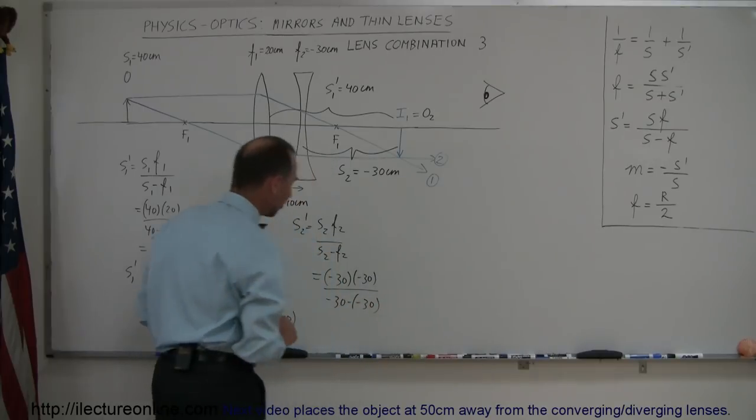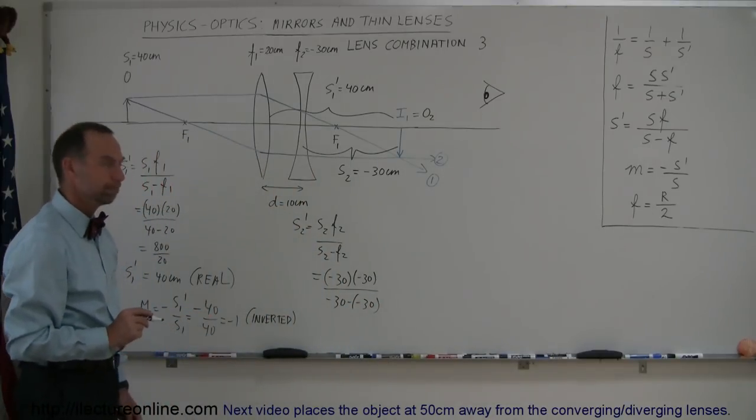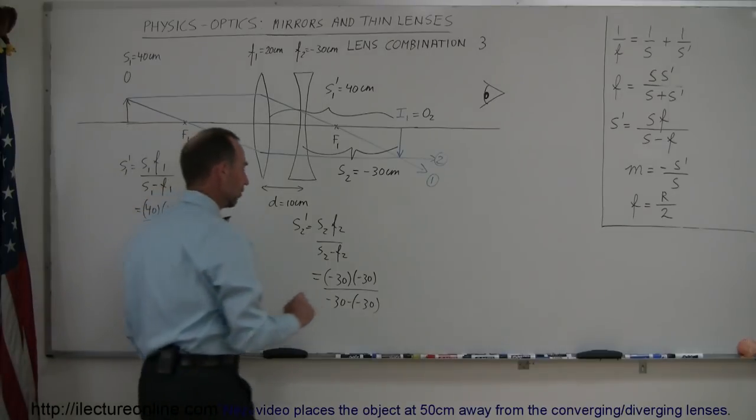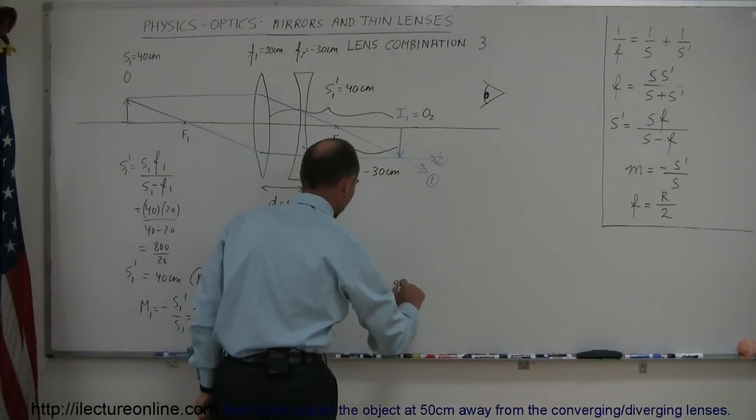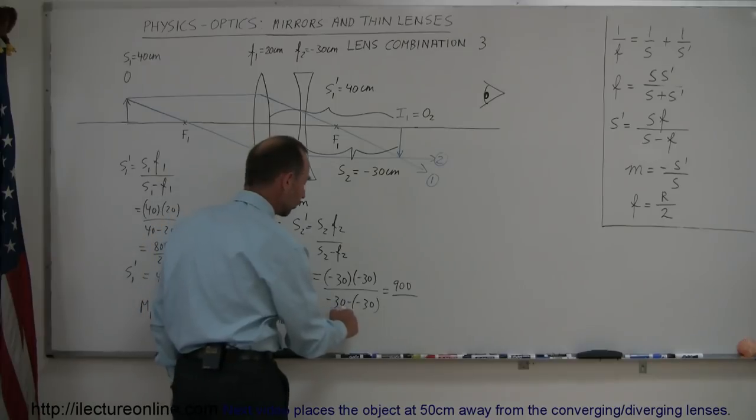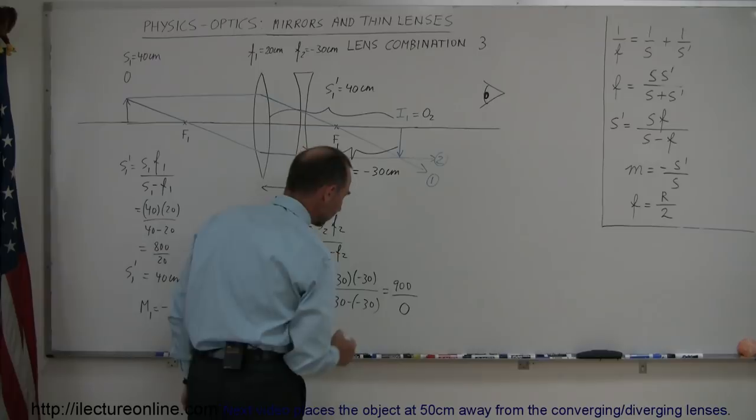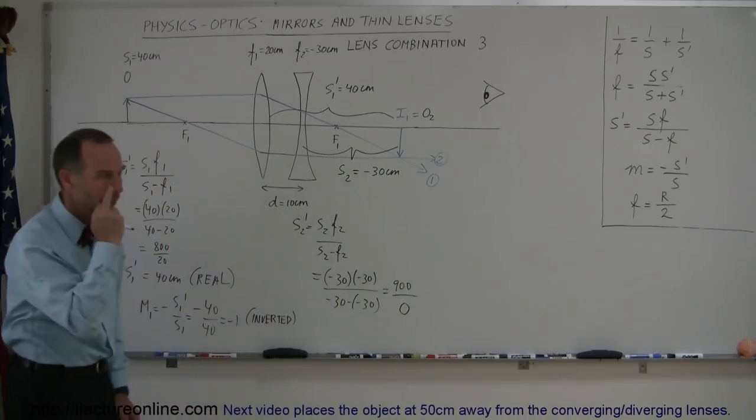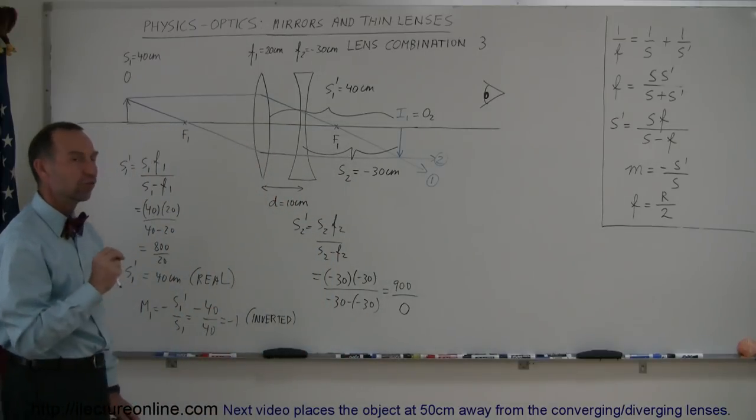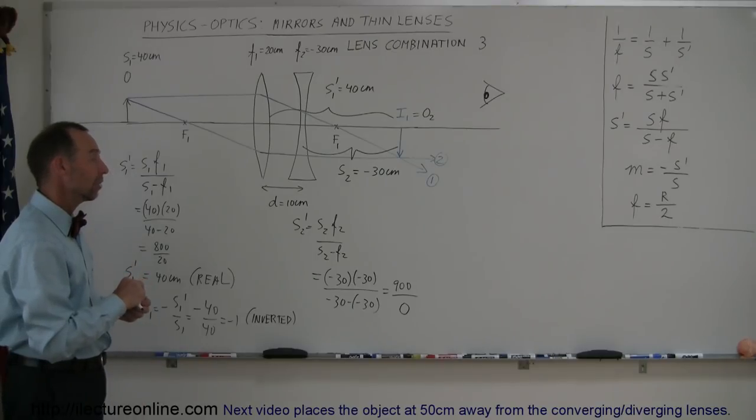Now here's an interesting situation. Let's see here, this is a positive 900 divided by minus 30 plus 30, which is zero. Wow, what does that mean? We have a zero denominator.